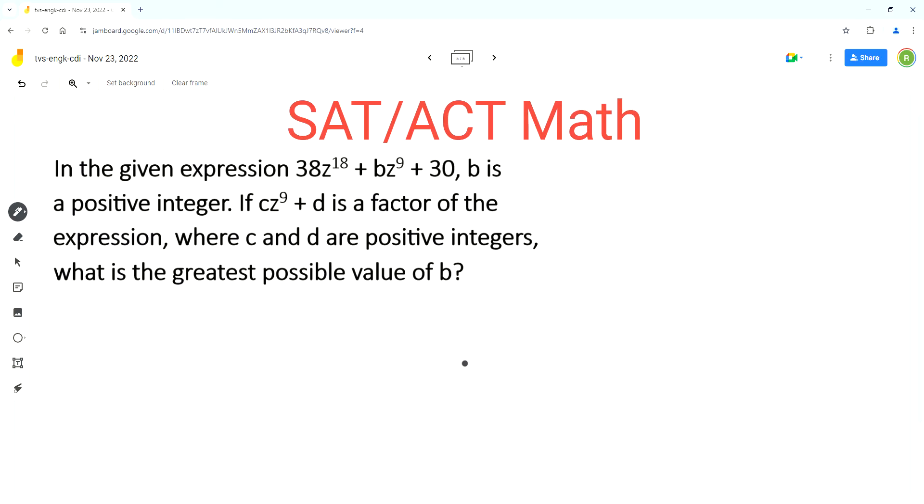As per the problem, in the given expression 38z^18 + bz^9 + 30, b is a positive integer. If cz^9 + d is a factor of the expression, where c and d are positive integers, what is the greatest possible value of b?